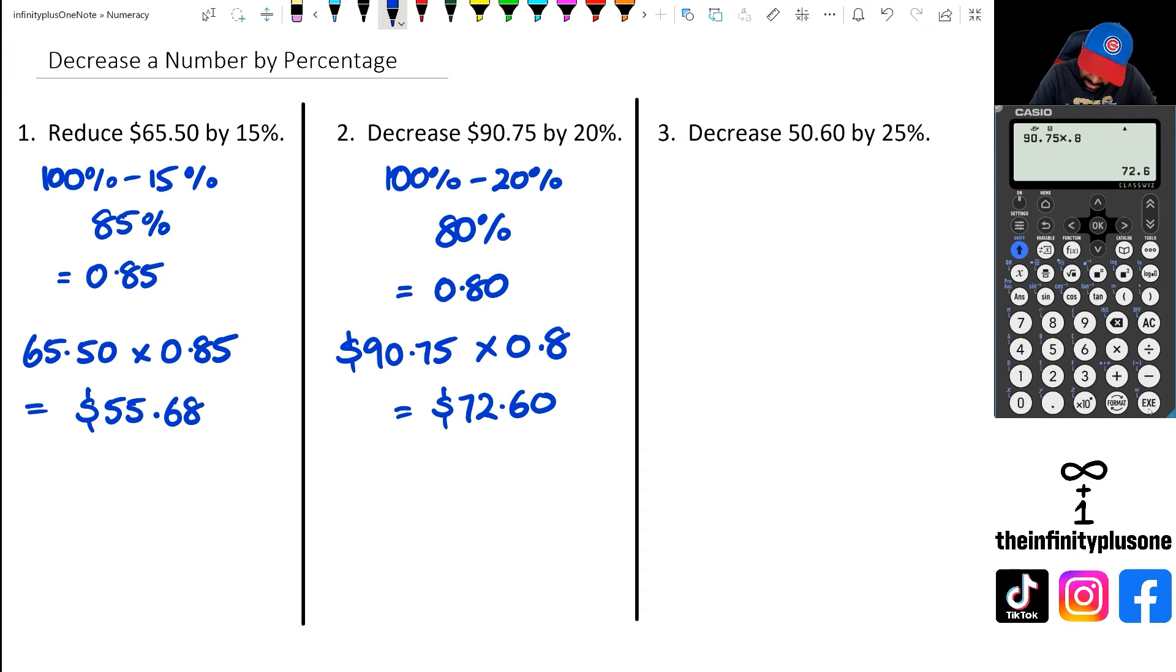But anyway, let's have a look at question three. So we're decreasing by 25%, so we're going to go 100 minus 25 which is 75, and then 75% as a decimal is 0.75. So then I could, because this is not a dollar this is just 50.60, I could go 50.60 multiplied by 0.75. So I'm going to go 50.6 multiplied by 0.75, and in this case I have an answer of 37.95.